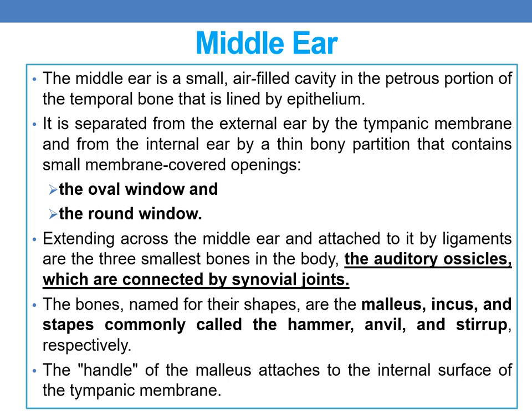The middle ear is a small air-filled cavity in the petrous portion of the temporal bone, lined by epithelium. It is separated from the external ear by the tympanic membrane and from the internal ear by the oval window and the round window. Extending across the middle ear and attached by ligaments are the three smallest bones of the body — the auditory ossicles — which are connected by synovial joints.